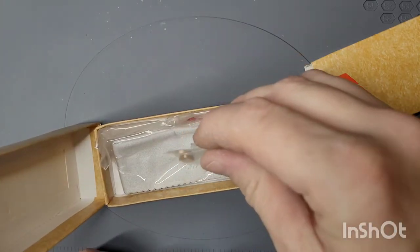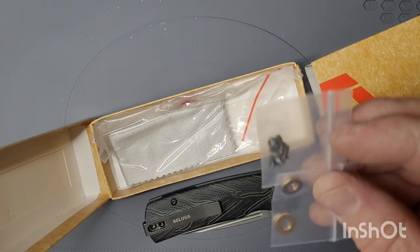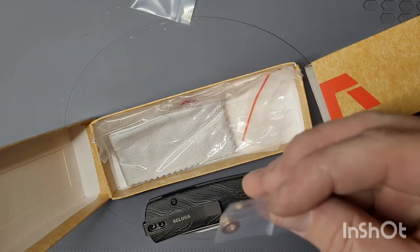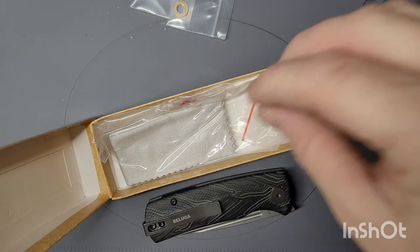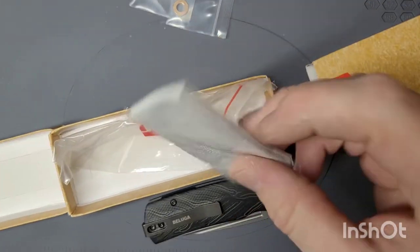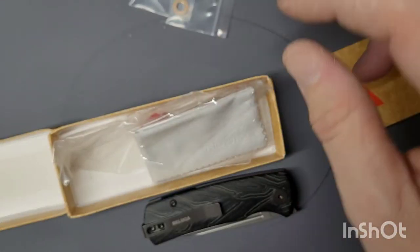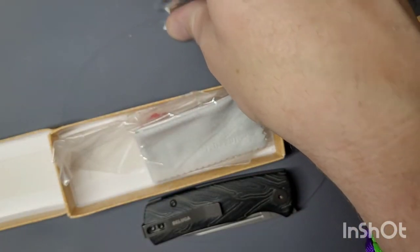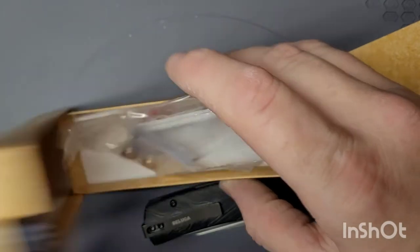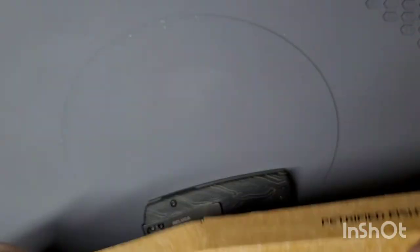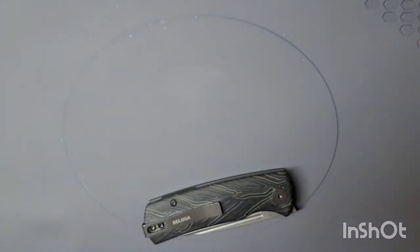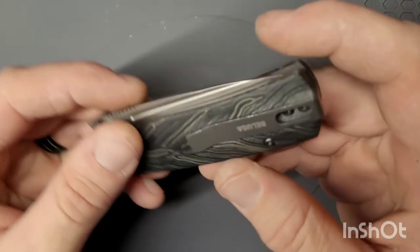It comes with some extra body screws, some extra washers, a nice little cloth to clean it off with. Let's get this out of here. Take a look at the knife.